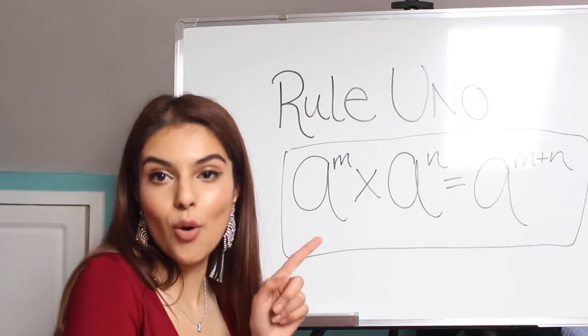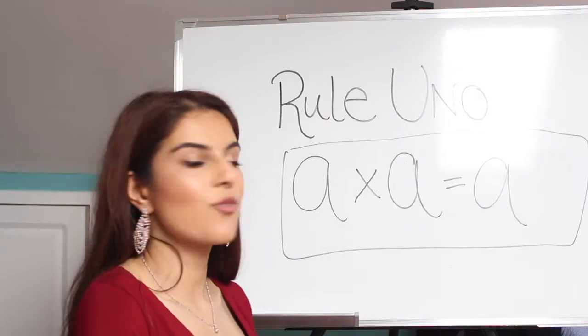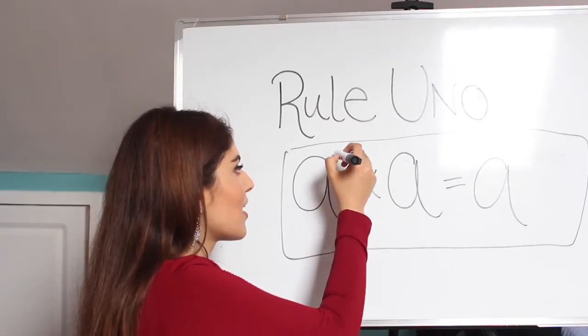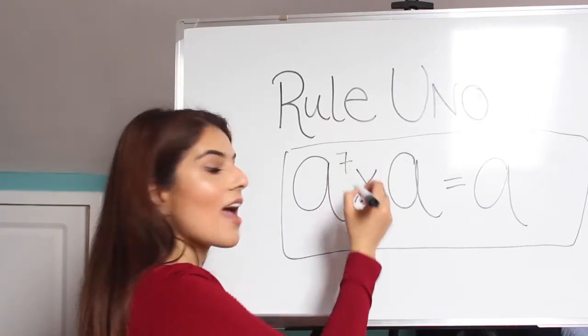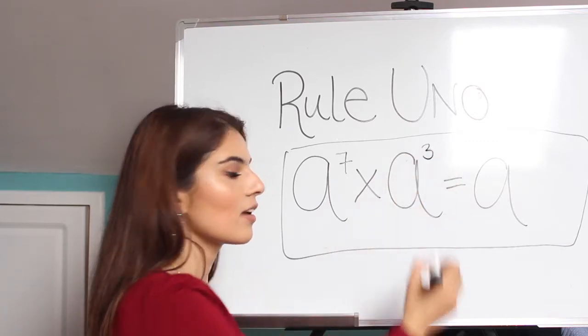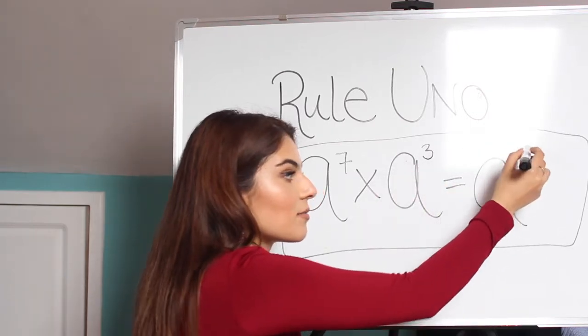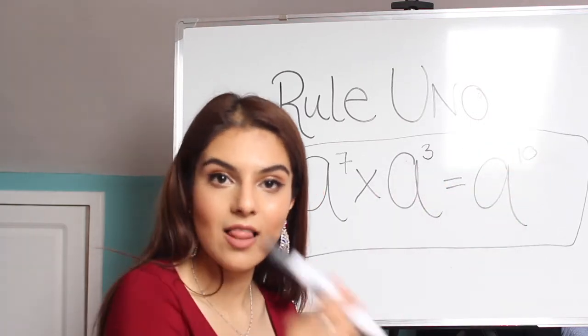Rule 1. If the indices are times together, you just add the powers up. So for example, if it was a to the power of 7 times a to the power of 3, the answer would just be 7 plus 3 which is 10. Easy peasy, lemon squeezy.